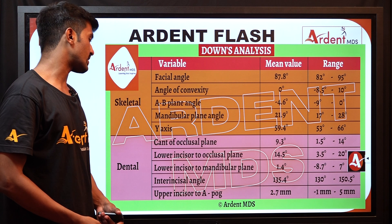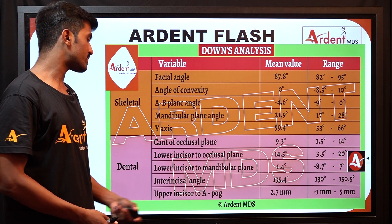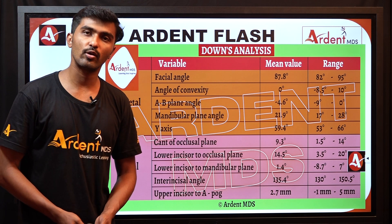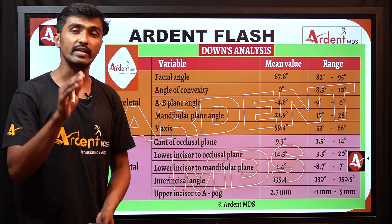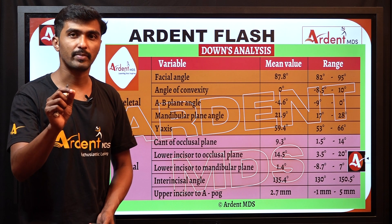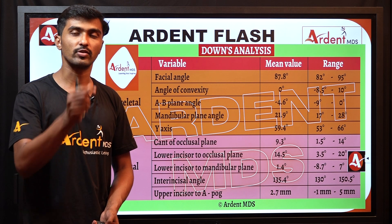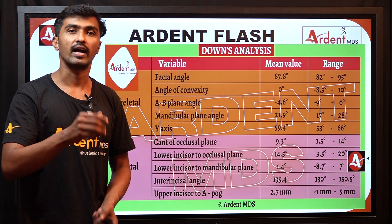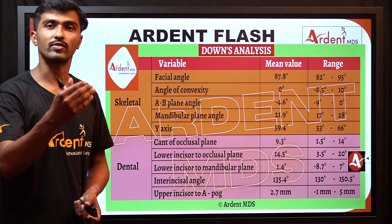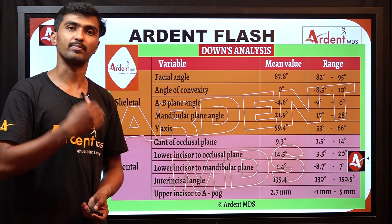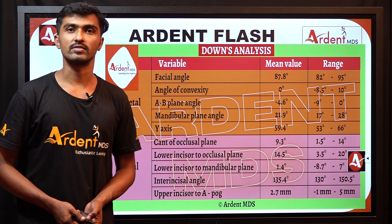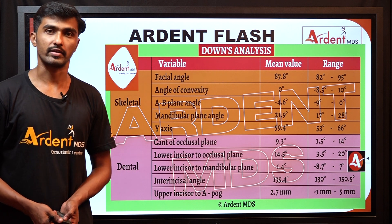With respect to the upper incisor to A-point, it is a linear measurement measured from the tip of the upper incisor with respect to A-point, and this will tell whether the incisor is in a forward or backward position. This is all about Downs Analysis. Thank you.